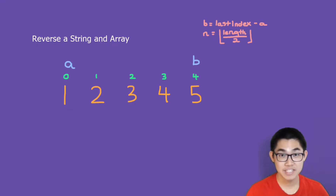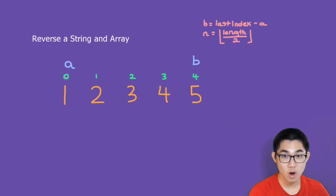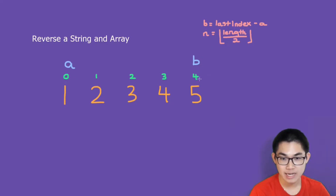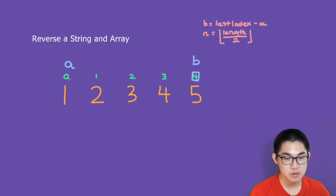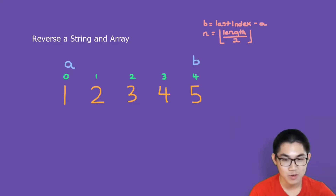A goes at the beginning of the array always, so A is at index 0. The formula for B is that you take the last index — the last index is 4 — and then 4 minus the index that A is at. So A is at 0, so 4 minus 0 is 4, and that's how you place B right there.